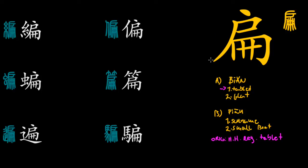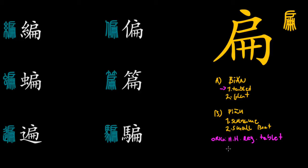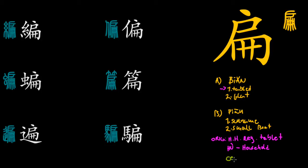The character is built up of two elements. The first element is pronounced hù, and it is a character which represents household. The second element is pronounced cè, and it means booklet. So you can see these two elements clearly merge into the meaning 'household registration tablet' — household and booklet — very straightforward and easy to understand.